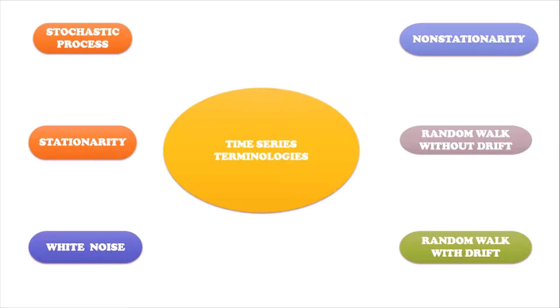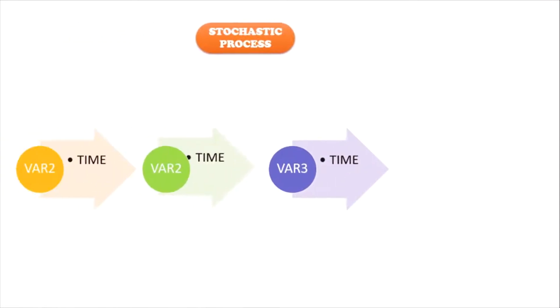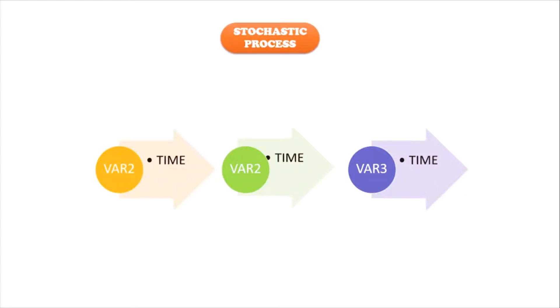We begin with stochastic process. A stochastic process is a series of random variables that are ordered according to time. This is basically a time series process — time series analysis is just an analysis of time series data, which is a stochastic process.